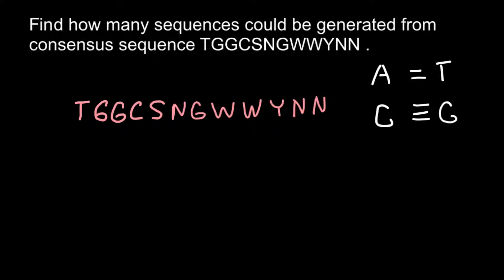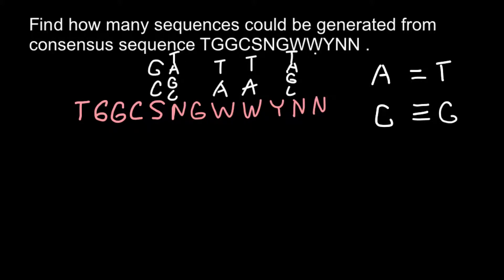W stands for the weak bases. So in place of S we can put either cytosine or guanine, and in place of W we can put adenine or thymine. N stands for any base — so we can put thymine, adenine, guanine, or cytosine. The same is true for the last two bases: thymine, adenine, guanine, or cytosine.